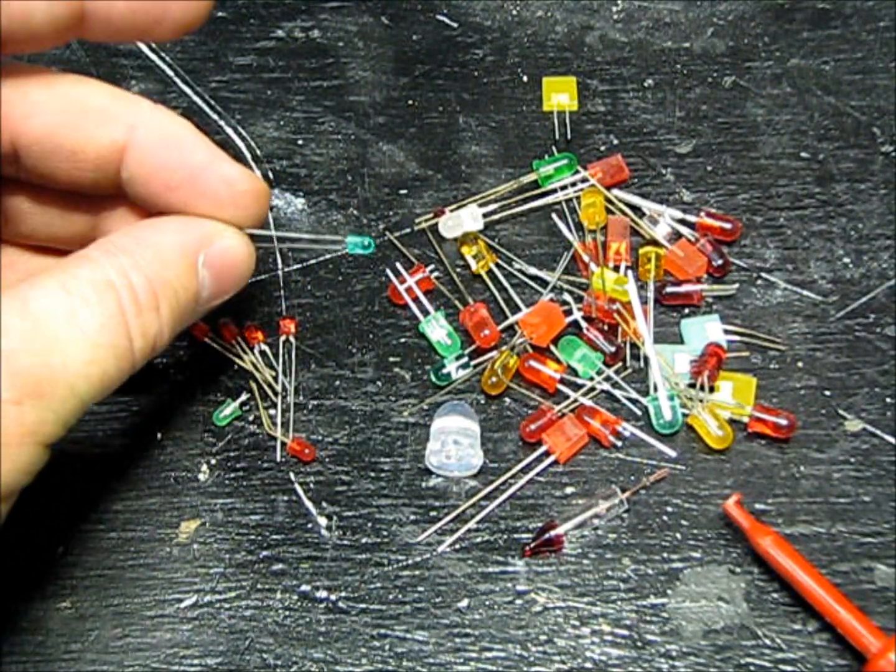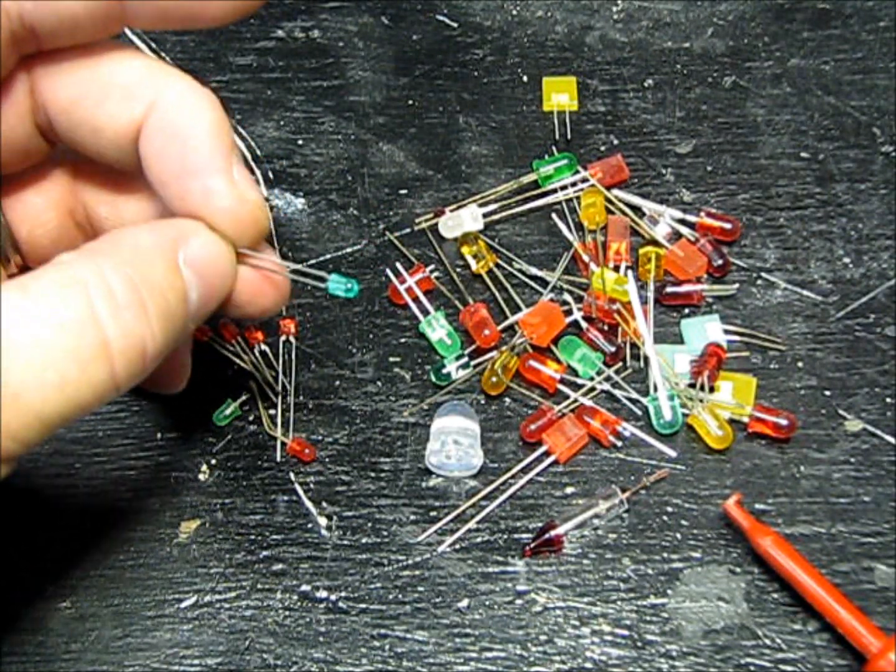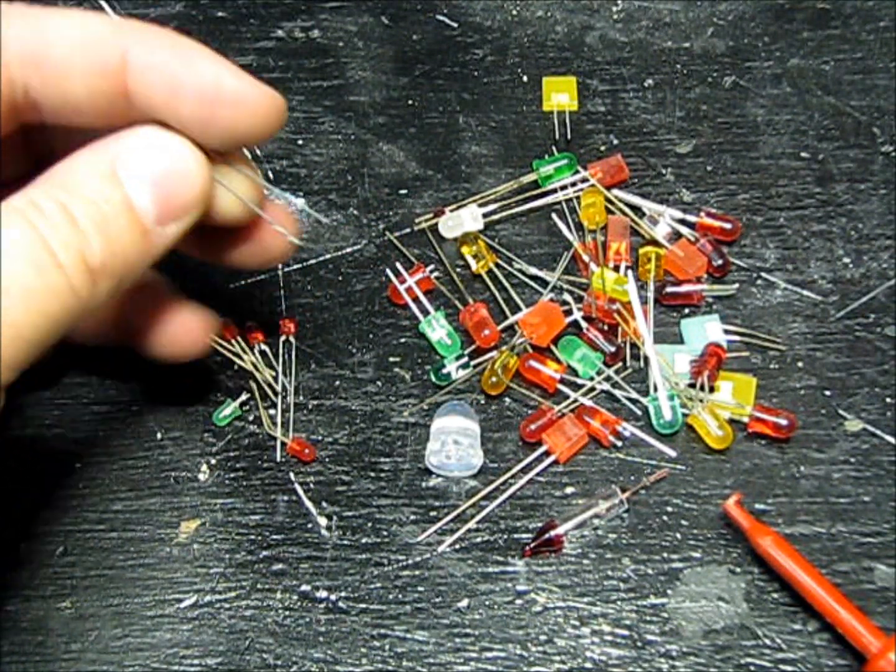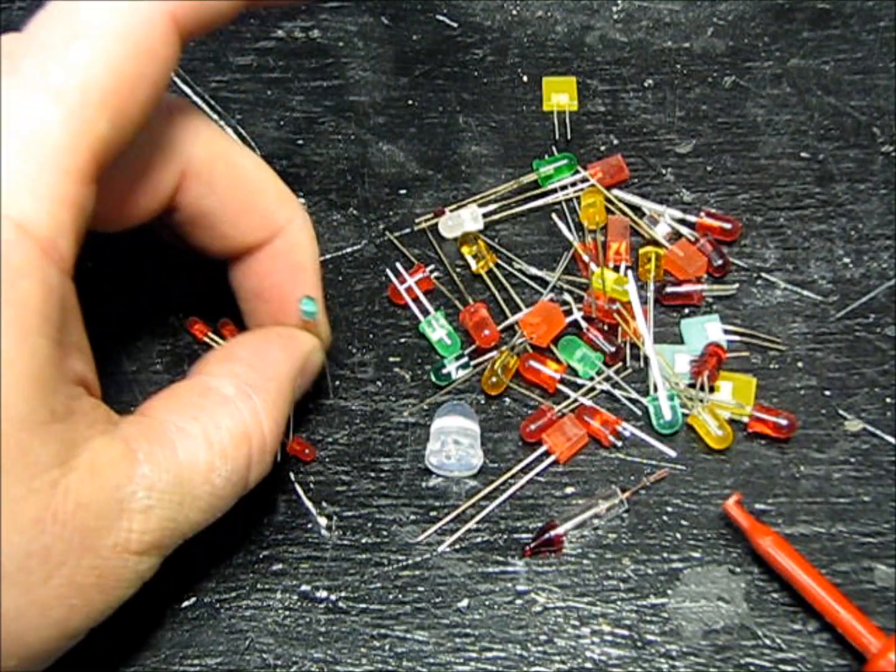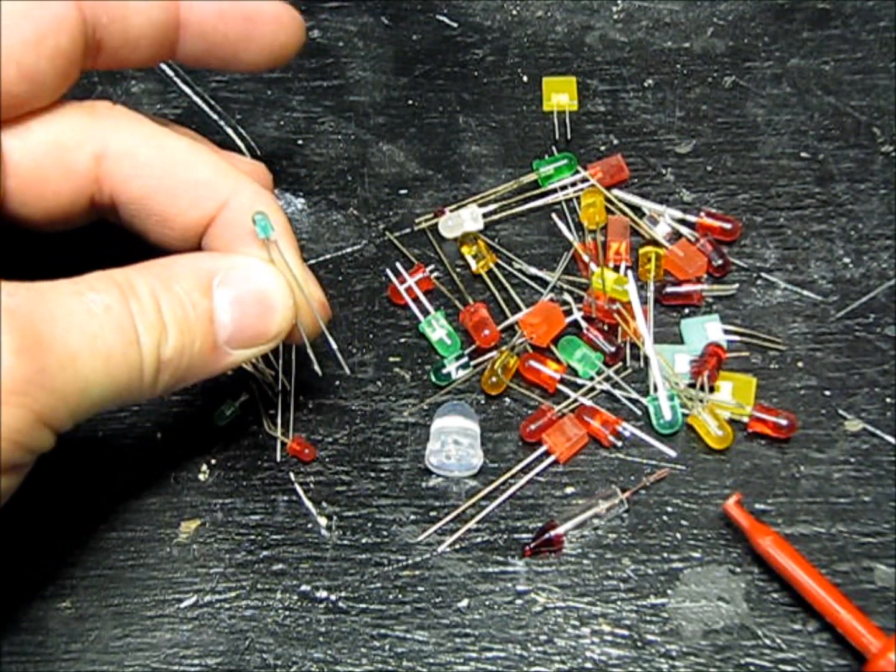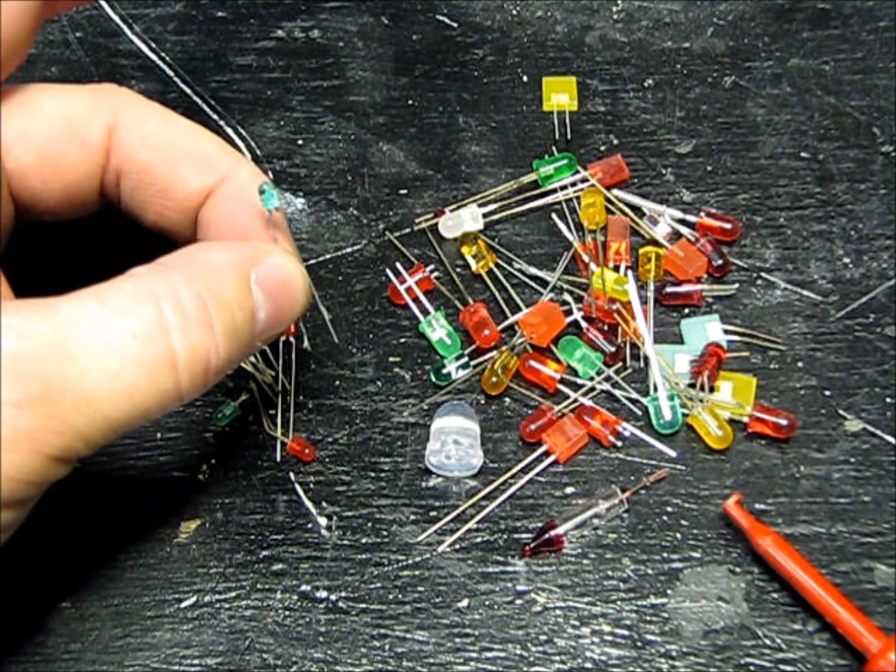LEDs come in a lot of different shapes and sizes. They are very low voltage, so an LED generally requires about two and a half to three volts to light.